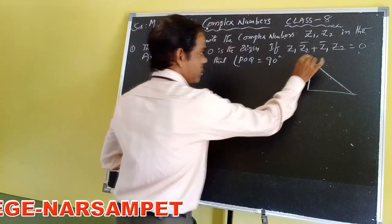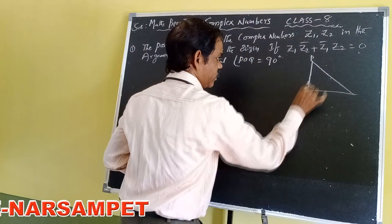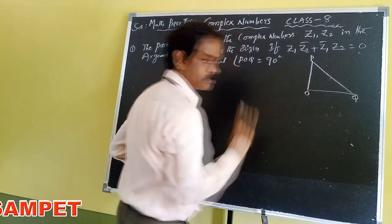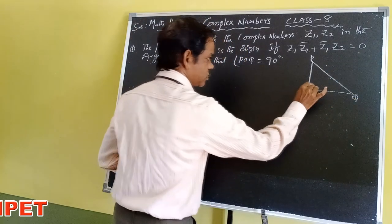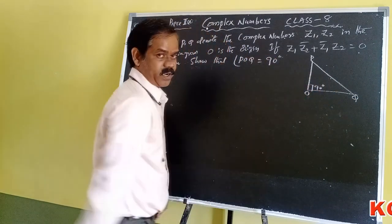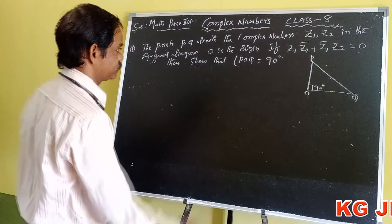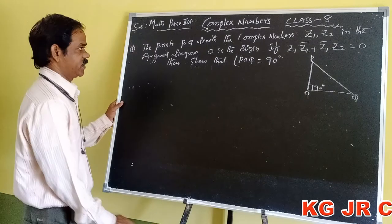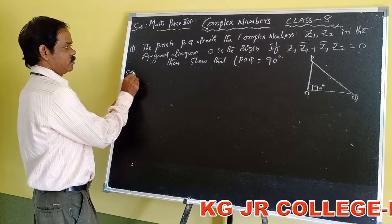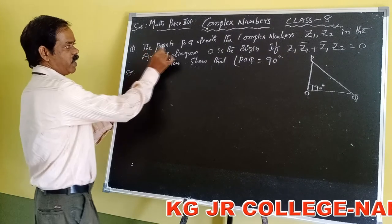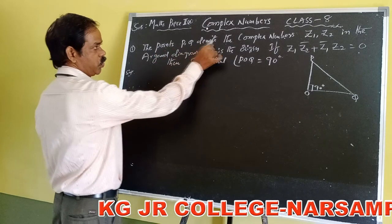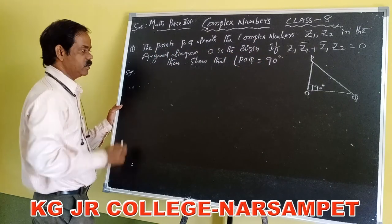See here — triangle POQ. So right angle triangle means we have to show that angle POQ is equal to 90 degrees. According to the problem, the points capital P and Q denote the complex numbers.